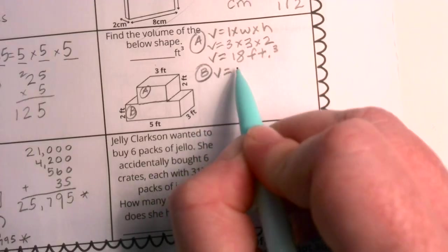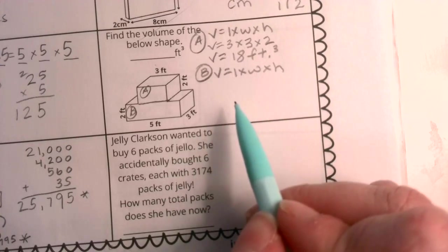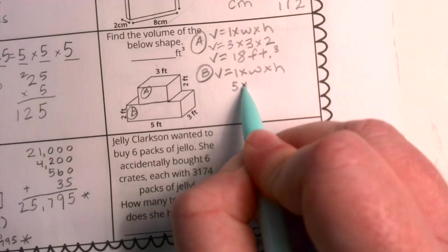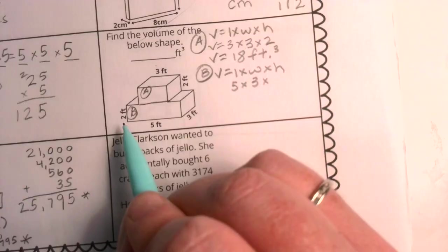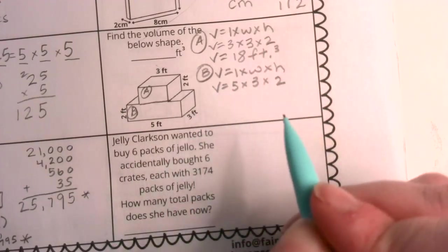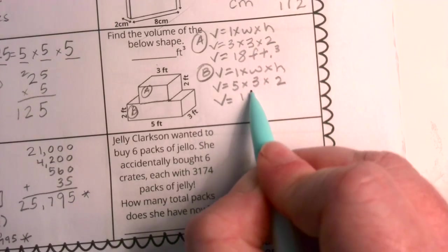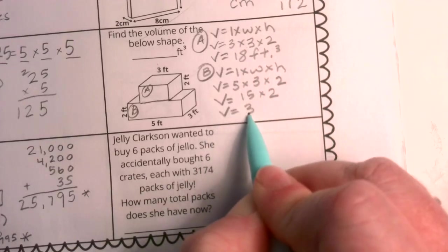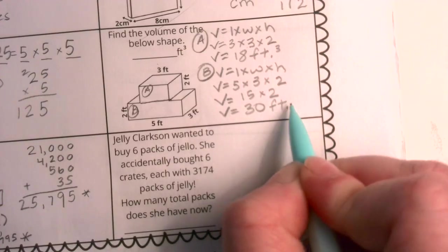Now let's find the volume of prism B. Volume still equals length times width times height. Now let's exchange those dimensions. The length of prism B is five. The width of prism B is three, just like the prism above it. And the height of this prism is two. It does have some similarities in dimension. Now I'm ready to solve. I know that three times five is 15, and I know that 15 times two is 30. I'm looking at 30 what? Well, it's going to be 30 feet cubed.